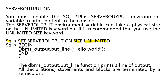The DBMS_OUTPUT.PUT_LINE function prints a line of output — it prints the message to the console. All declarations, statements, and blocks are terminated by a semicolon. So here the code is: BEGIN DBMS_OUTPUT.PUT_LINE('Hello World'); END; followed by forward slash.